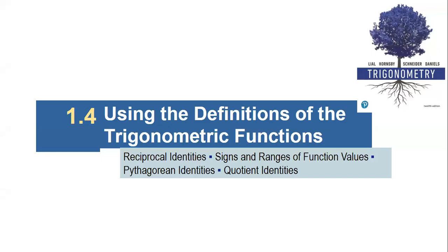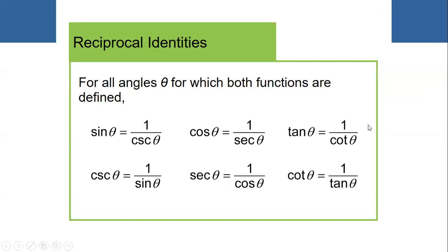Let's keep diving into section 1.4, the last and final section. We're going to be using the definitions of trig functions to help us solve and evaluate. We'll cover reciprocal identities, signs and ranges of function values, Pythagorean identities, and quotient identities. In the last section you were using x's, y's, and r — now we're going to focus on sine, cosine, tangent, and their reciprocal functions.